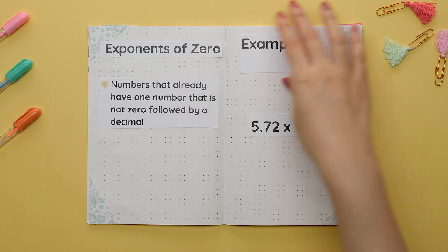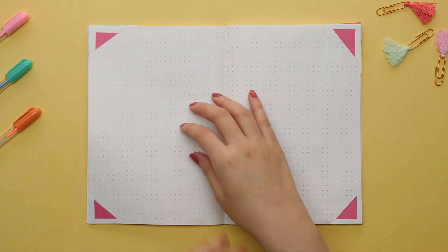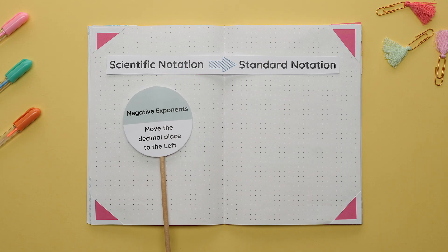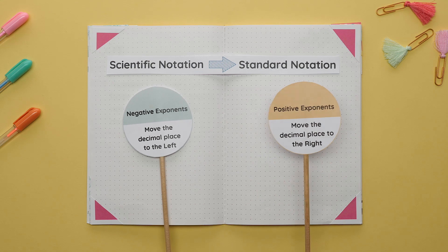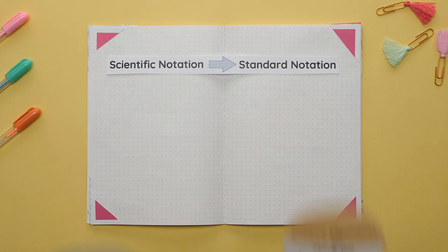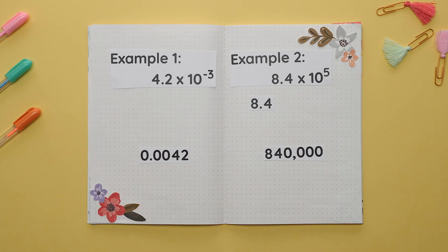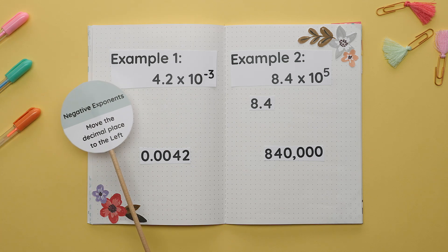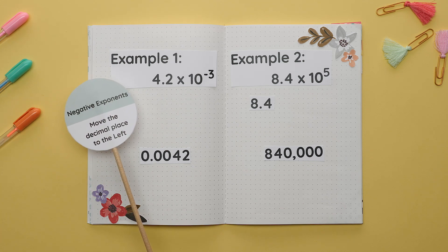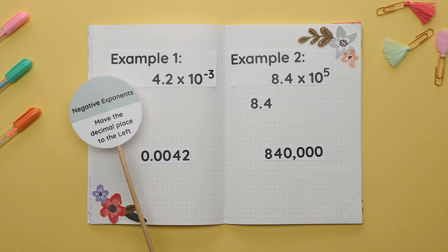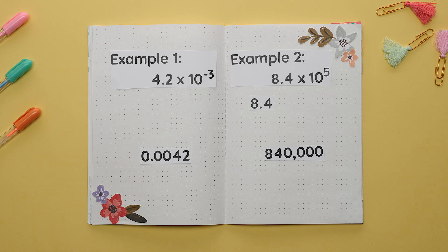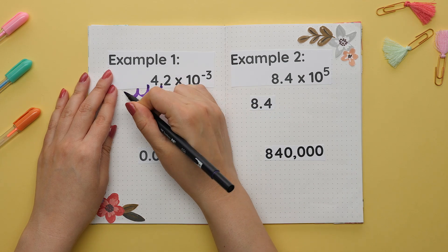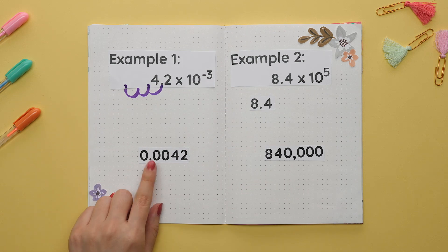Now let's practice going the opposite way, converting from scientific notation to standard notation. It is important to know that for negative exponents we move the decimal place to the left, while for positive exponents we move the decimal place to the right. For our first example we will convert 4.2 times 10 to the negative third power to standard notation. The exponent tells us how many times we move the decimal over, and the sign tells us which way. Since our exponent is negative three, we move the decimal to the left three times, giving us 0.0042.